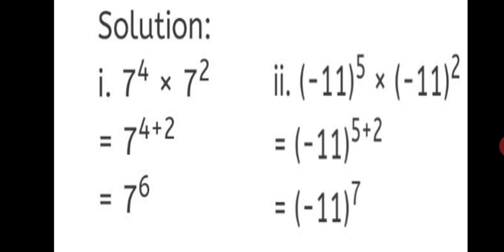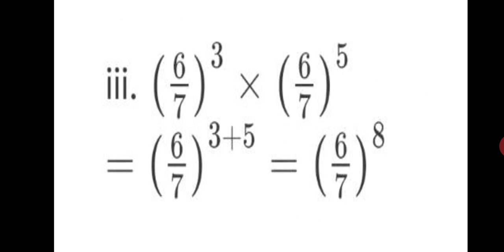While multiplying indices, we add the powers, and the base remains as it is. This rule is applicable only when the base is the same. Third sum: 6 upon 7, raised to the power of 3, into 6 upon 7, raised to the power of 5. Base is same, so take it common and add the index: 3 plus 5 equals 8. Final answer: 6 upon 7, in bracket, raised to the power of 8. The bracket shows that the power applies to both numerator and denominator.